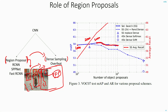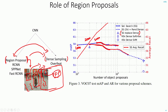Another experiment they did was, after 2000 boxes, they replaced selective search with dense sampling, that is sliding window detection. The result shows that accuracy starts dropping immediately. Unlike selective search where the drop in accuracy is somewhat slow, with dense sampling the accuracy drops drastically. This is consistent with the intuition that region proposals are much better compared to dense sampling techniques.